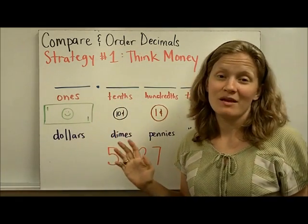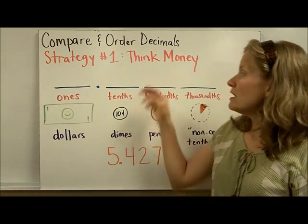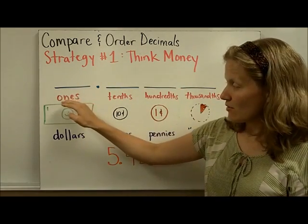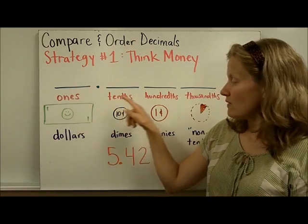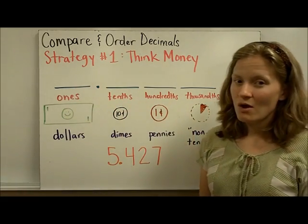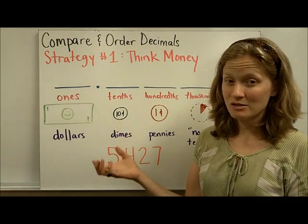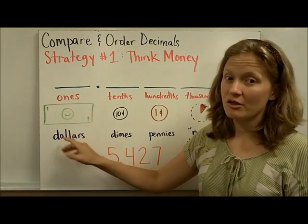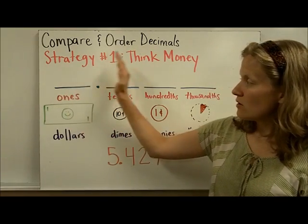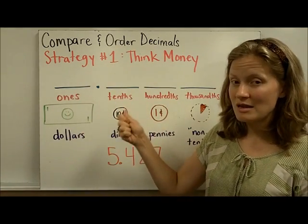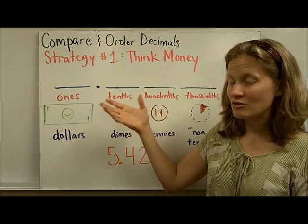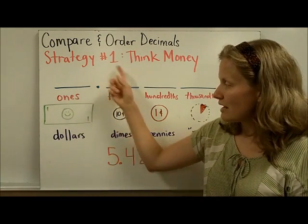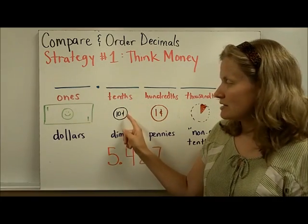The first strategy — and the one I like the most because it makes you think about what you're doing — is to think money. When we talk about place values in a decimal, the ones place is always to the left of the decimal point, then it goes tenths, hundredths, thousandths. We can relate a piece of money to each one of those. The ones place represents dollars. As we go to the right, we take one-tenth of each place value. If we think about a dollar chopped into ten pieces, one-tenth of a dollar would be a dime. So the dimes represent the tenths place.